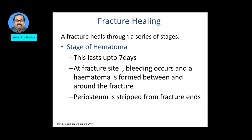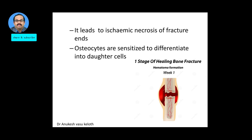At the fracture site, bleeding occurs and a hematoma is formed between and around the fractured ends. The periosteum is stripped up from the fracture ends, which is one reason for ischemic necrosis of the fracture ends — approximately 1 to 2 mm may undergo ischemic necrosis. Osteocytes are sensitized during this phase so that they can later differentiate into daughter cells.